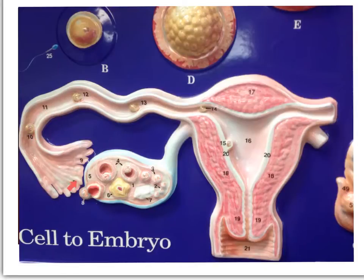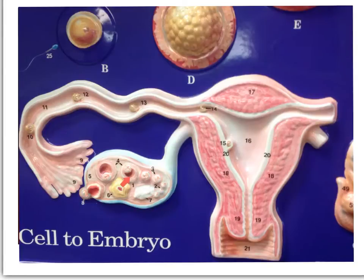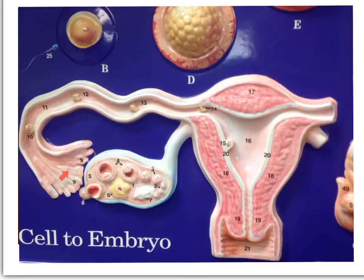Returning to the ovary we can see the primary oocytes. As we continue through development we will start to see the developing fluid-filled vesicles called the antrum. Then we see the ovulation of the follicle, with the oocyte being released by the ovary, and it will be picked up by the fallopian tube.